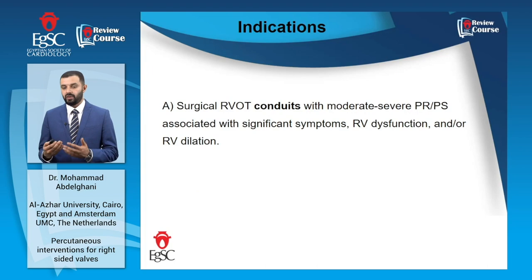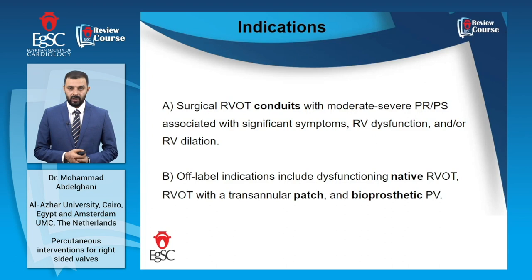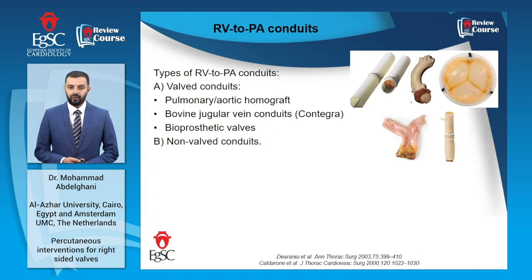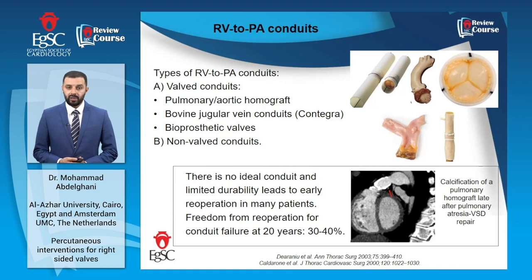Off-label indications for transcatheter pulmonary valve implantation include dysfunctioning native RVOT, RVOT with a transannular patch, and bioprosthetic pulmonary valves. RV-to-pulmonary artery conduits can be broadly classified into non-valved or valved conduits; valved conduits include homografts, Contegra conduits, and bioprosthetic valves. None of these options are ideal because of limited durability; freedom from re-operation for conduit failure at 20 years is as low as 30%.